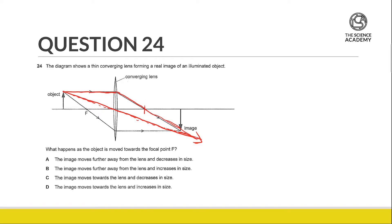This is how the focal point is defined, which is the point where all rays traveling parallel to the principal axis converge to upon emerging from the lens.